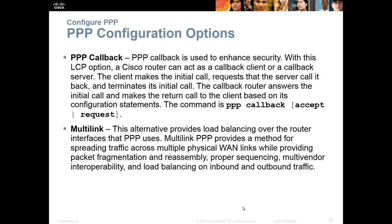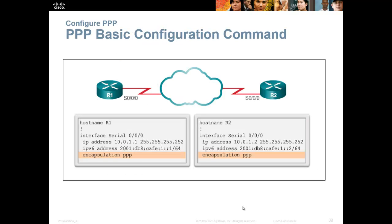Multi-link is like link aggregation — similar to EtherChannel from switching. You can have multiple lines, like three T1s, and link them together. To configure: you create a hostname (especially important for authentication), go into the interface — for example, serial 0/0/0 — and turn it on with 'encapsulation PPP'. For HDLC it's 'encapsulation HDLC'; for basic PPP it's 'encapsulation PPP'. That decides the format of the frames you'll be sending back and forth.